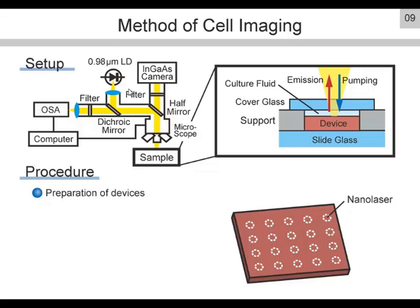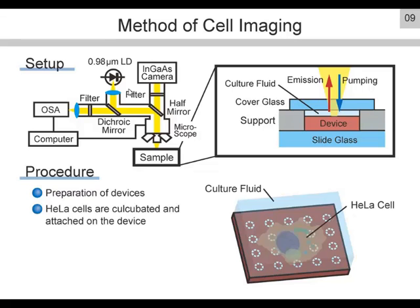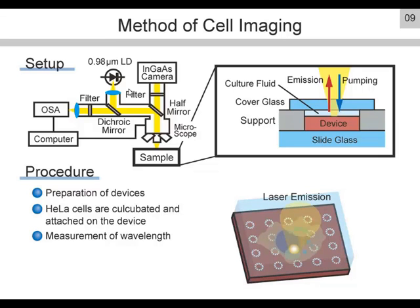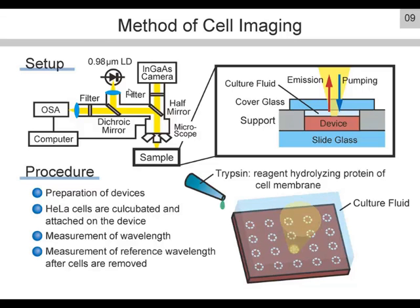The measurement procedure is as follows. HeLa cells are captured and attached on the nanolaser. We then measure the wavelength of all nanolasers. Finally, the cells are removed by trypsin, a reagent that hydrolyzes the protein of the cell membrane, and the reference wavelength is measured at the clean surface. The cell images are acquired from the mapping of wavelength shifts.